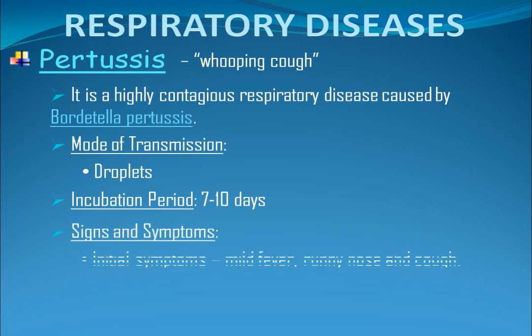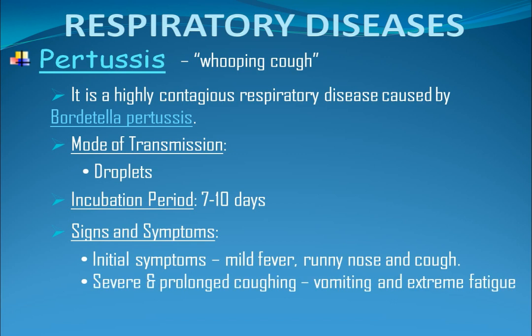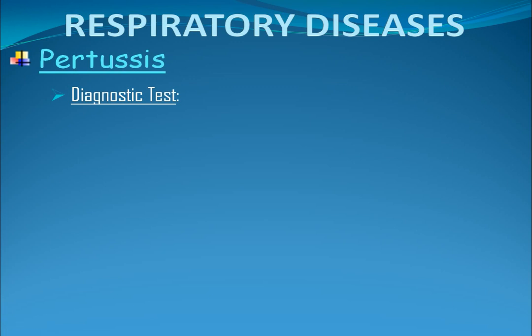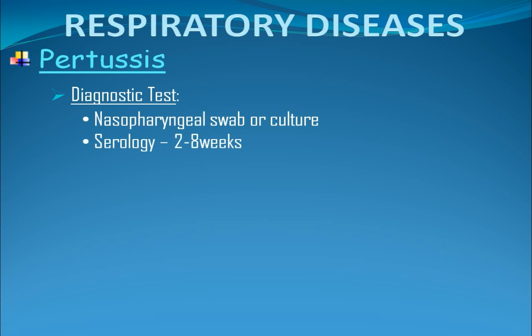The incubation period is 7 to 10 days. Signs and symptoms: The initial symptoms include mild fever, runny nose, and cough. Gradually, the cough will develop into violent coughing due to thick mucus that accumulates inside the airways. Severe and prolonged coughing attacks may lead to vomiting and extreme fatigue. Other complications include coughing paroxysms, pneumonia, and seizure. Diagnostic tests: nasopharyngeal swab or culture — done to check the presence of Bordetella pertussis. Serology: the best time to collect is 2 to 8 weeks following the onset of cough, when the antibody titers are at their highest.